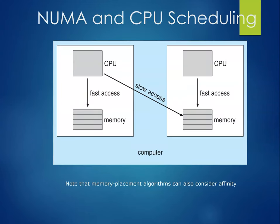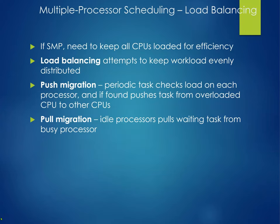There's NUMA and CPU scheduling. The CPU first accesses fast local memory; if it needs to call across, it accesses slower memory. For load balancing with symmetric multiprocessors, we need to keep all CPUs loaded for efficiency. Push migration periodically checks load on each processor and pushes tasks from an overloaded one to a less overloaded one. Pull migration is when idle processors pull waiting tasks from a busy processor.